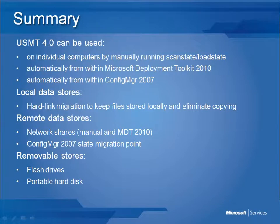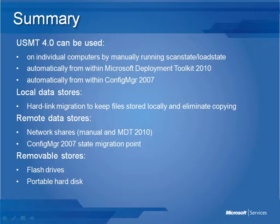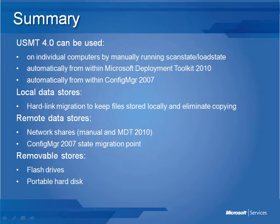To summarize, we can use User State Migration Toolkit 4.0 on individual computers by manually running ScanState and LoadState, or automatically from within Microsoft Deployment Toolkit 2010, or at an enterprise level automatically from within Config Manager 2007 which allows us to target deployments to specific machines. From a storage perspective, we can use local data stores such as hardlink migration stores to keep files locally on the machine, eliminating the time and effort of copying them up to the network and back down. For remote data stores we can use network shares or System Center Configuration Manager 2007 state migration points, and it's also possible to use removable stores such as flash drives and portable hard disks.